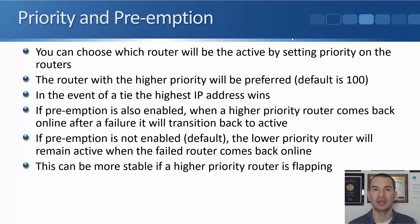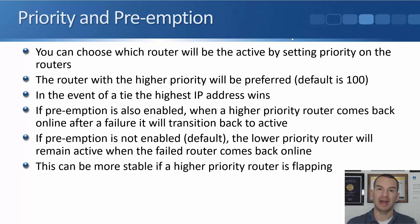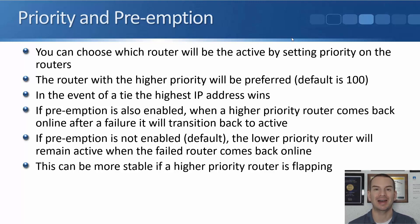Say R1 has an intermittent issue where it's flapping up and down. If you've enabled priority and preemption, the active role will keep switching between R1 and R2 — R1, then R2, then R1, then R2. There's going to be a short outage each time that happens. So often it's a better idea not to enable preemption.